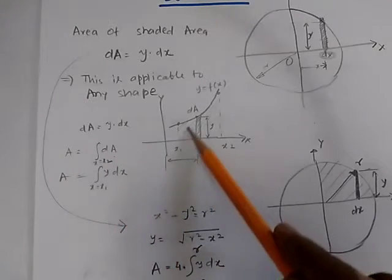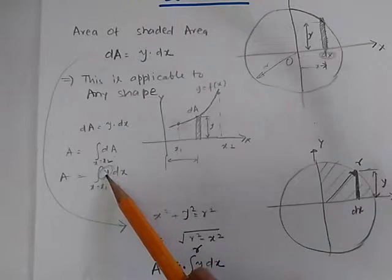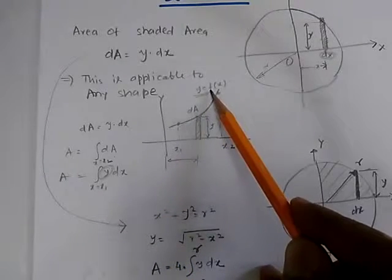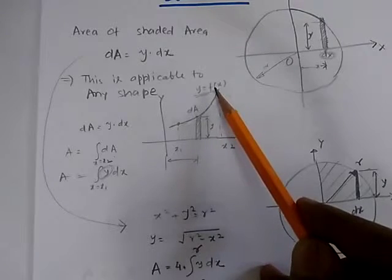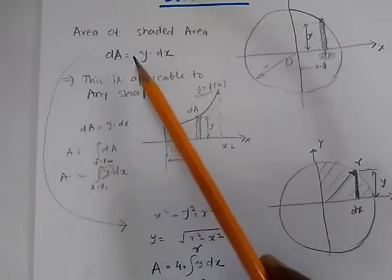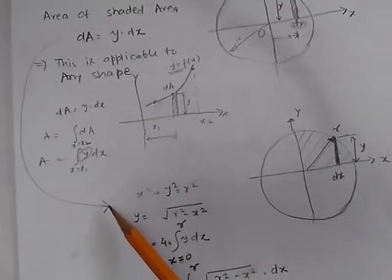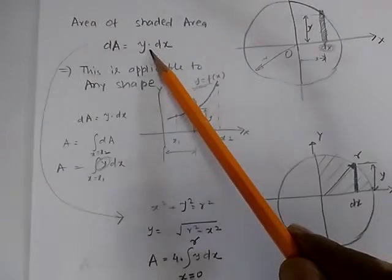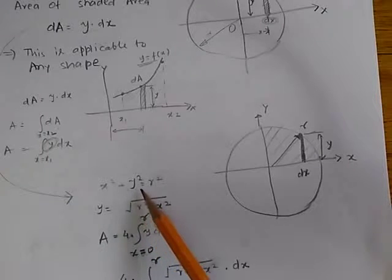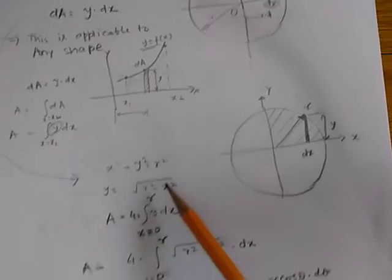In all these problems, we need to express y in terms of x, where y = f(x); for example, x² + 2 or anything like that. Coming back to the circle, dA = y·dx, and the next step is to express y in terms of x. We know the equation of a circle is x² + y² = r², so y = √(r² - x²).